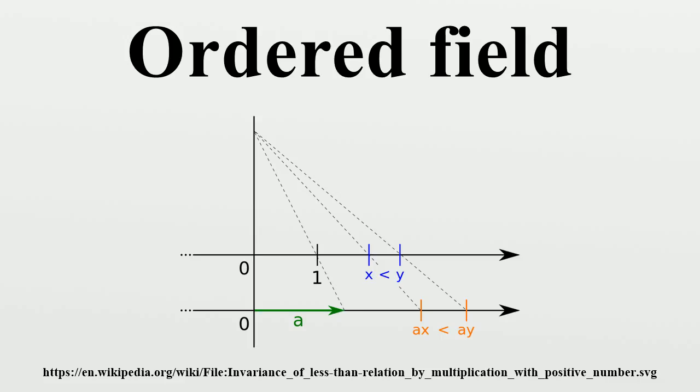Harrison Topology: The Harrison topology is a topology on the set of orderings XF of a formally real field F. Each order can be regarded as a multiplicative group homomorphism from F onto plus or minus 1, giving plus or minus 1 a discrete topology and plus or minus 1^F the product topology.